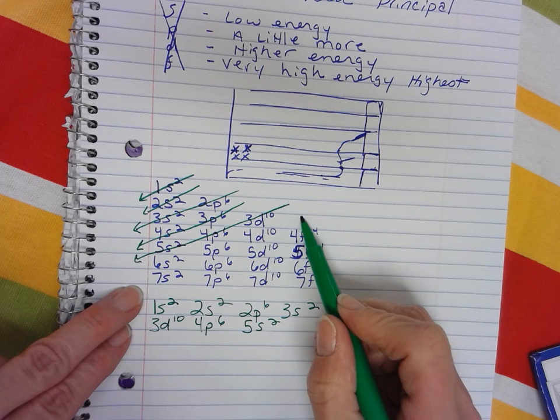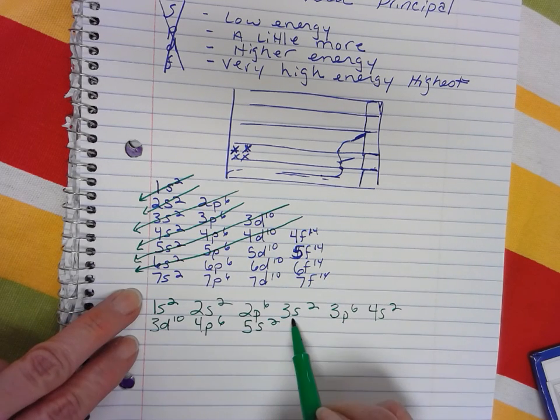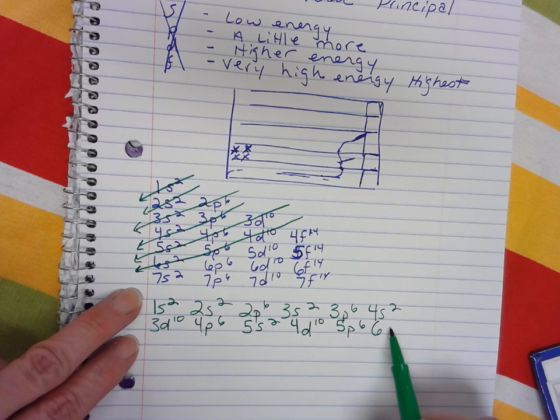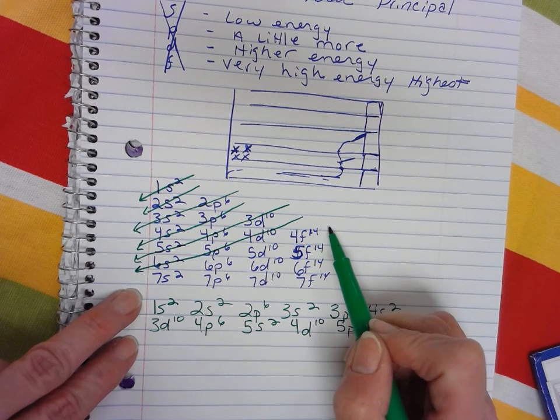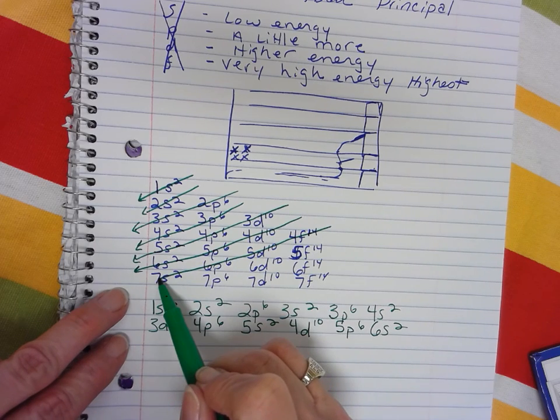Next, your 4d10, your 5p6, and your 6s2. Next is going to be your 4f14, 5d10, 6p6, and 7s2.